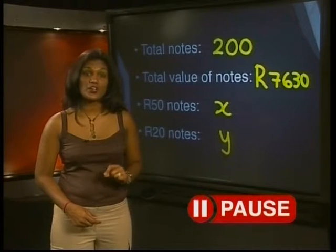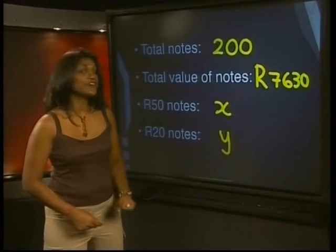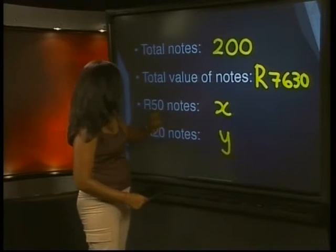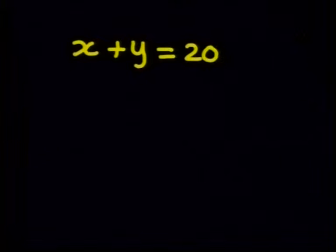Can you write an equation using this information? Have another look at everything we know. The number of 50 rand notes plus the number of 20 rand notes is equal to 200. So we write this as x plus y is equal to 200 and we'll call this equation 1.